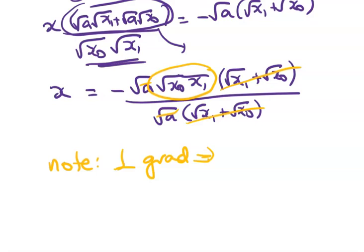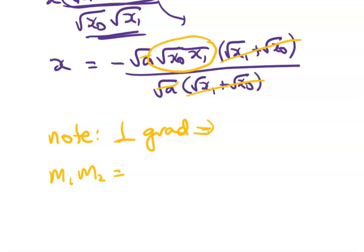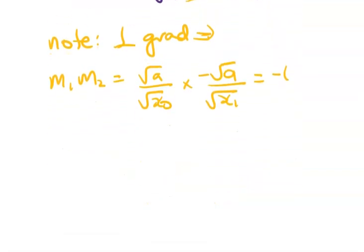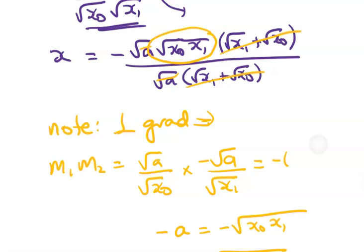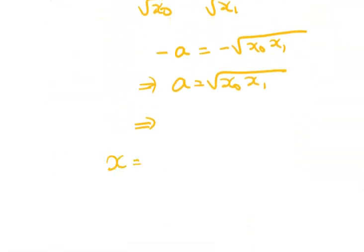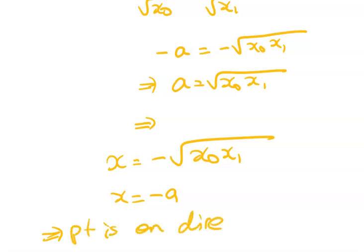Perpendicular gradients. So what does that mean? Now, pause the video here and you can finish this off. Right, m1, m2 is equal to root a on root x0 times negative root a on root x1 must be equal to negative 1. That gives me negative a is equal to negative root root x0 x1. Therefore, a is equal to root x0 x1. Therefore, up in here, remember, we were left with, we had x equals negative root x0 x1, which is equal to negative a. Therefore, point is on the direct root x0.